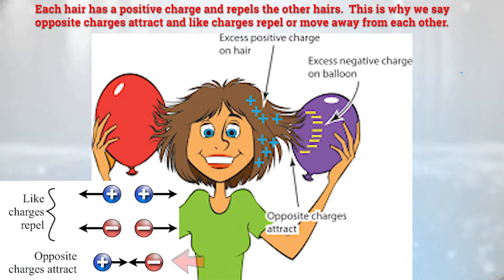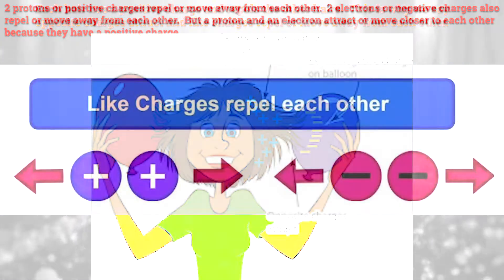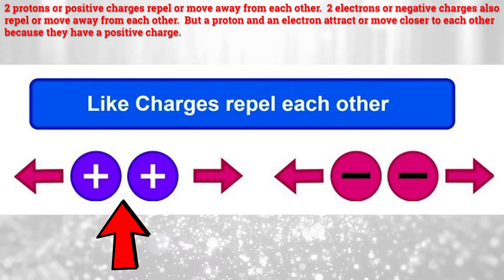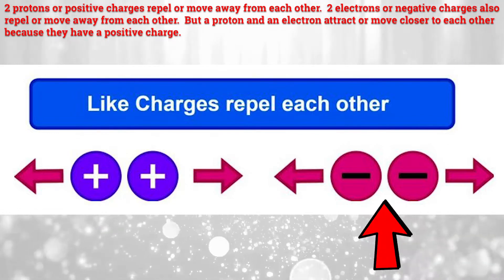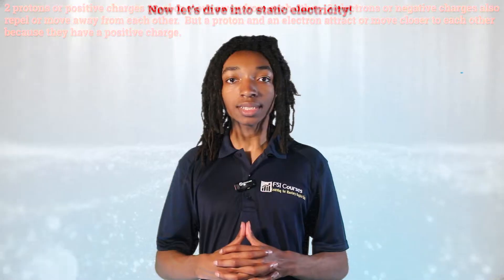This is why we see opposite charges attract and like charges repel or move away from each other. Two protons or positive charges repel or move away from each other. Two electrons or negative charges also repel or move away from each other.